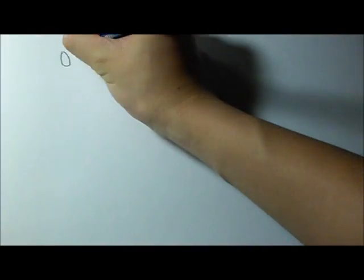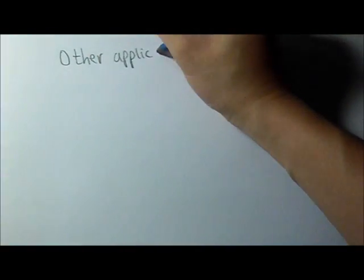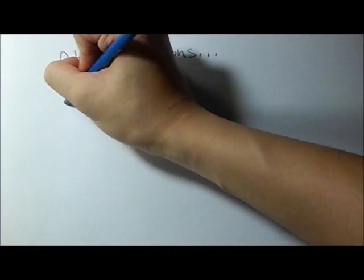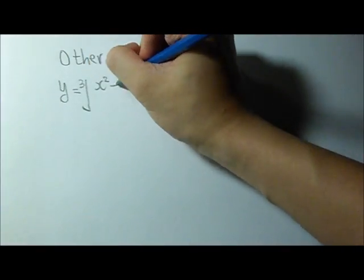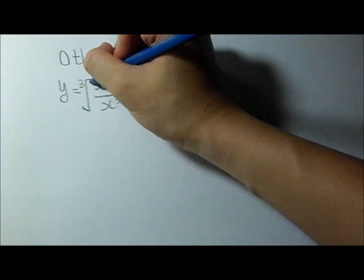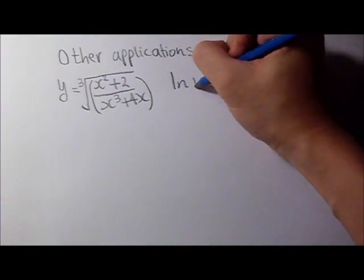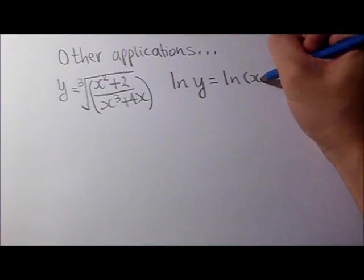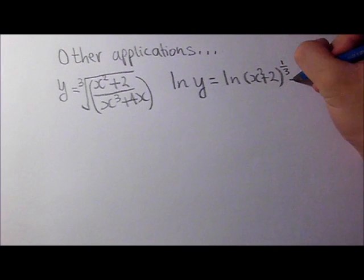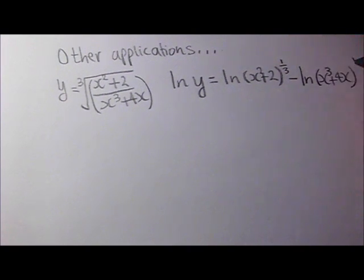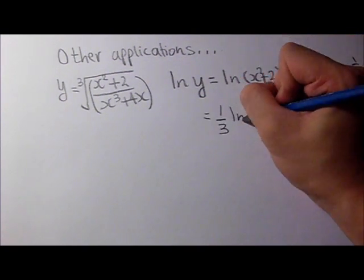So another application we'll be looking at is to make it convenient to differentiate complicated functions, such as cube root of x squared plus 2 over x cubed plus 4x. So we write ln y equals ln x squared plus 2 to the one third minus ln x cubed plus 4x, because of log rules.